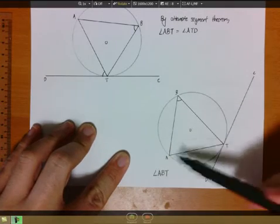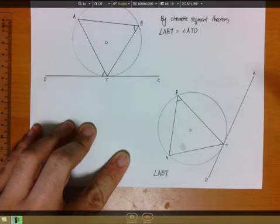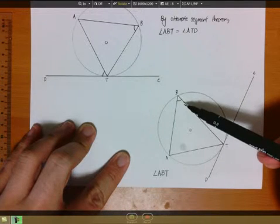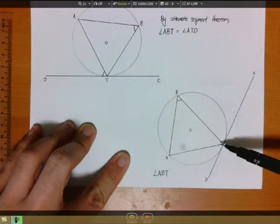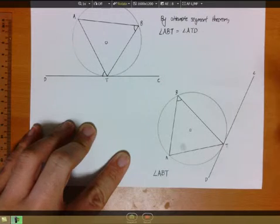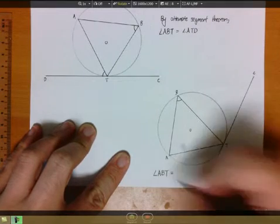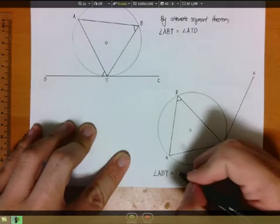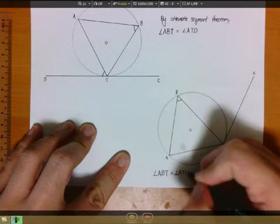So here we have angle ABT, so remember, from the angle, you head towards the tangent, so you count 1, and continue going out, is 2. So in this case, by alternate segment theorem, angle ABT is equals to angle ATD.